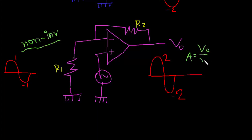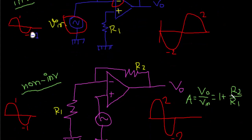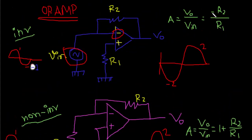1 plus R2 by R1. Always R2 by R1. 1 plus R2 by R1, and that is R2 by R1 with a negative sign. So this is inverting and this is non-inverting.